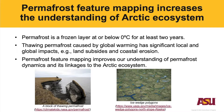Permafrost is a frozen layer at or below zero degrees Celsius for at least two years. Recently, global warming is driving dramatic changes to the Arctic ecosystem, especially the permafrost. Thawing permafrost has significant local and global impact — for example, land subsidence can cause damage to buildings or roads. So mapping permafrost features can improve our understanding of permafrost dynamics and its linkage to the Arctic ecosystem.